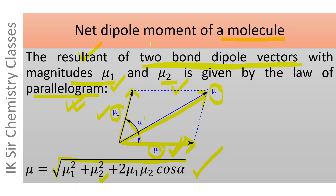If a molecule contains more than two polar covalent bonds, the net dipole moment of the molecule is equal to the vectorial sum of bond dipole vectors of all its bonds.